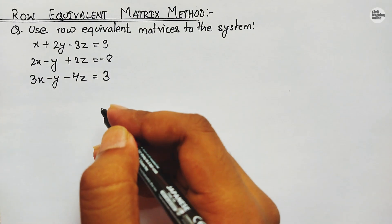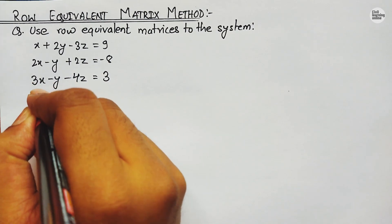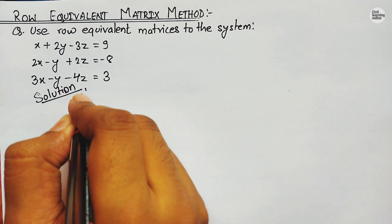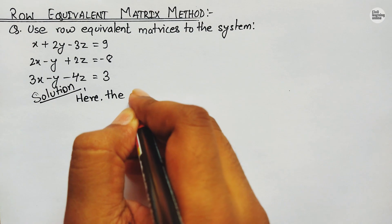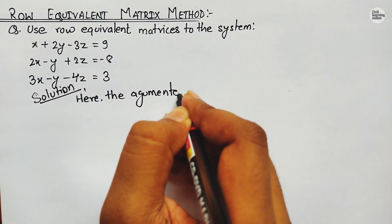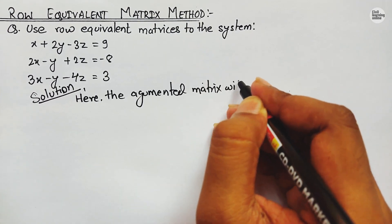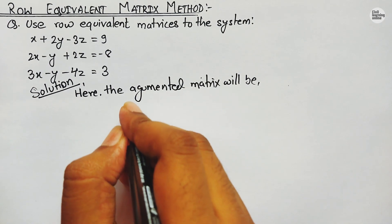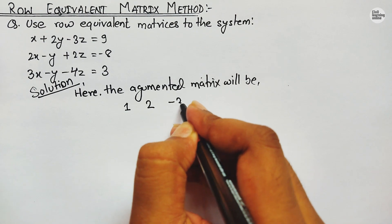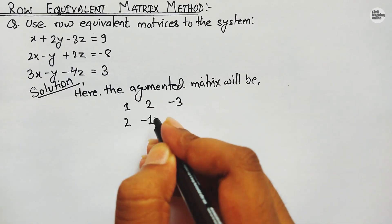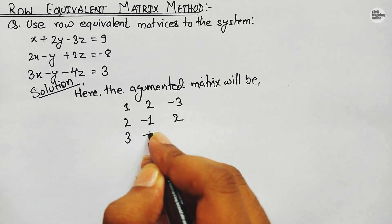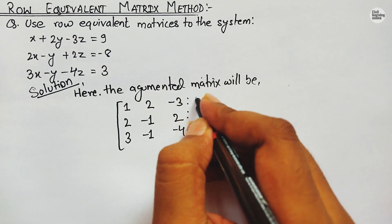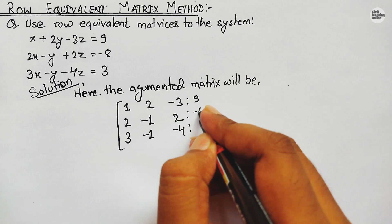Let us begin with the solution. The augmented matrix is simply the coefficients of all the algebraic expressions. So we write: 1, 2, -3; 2, -1, 2; 3, -1, -4 — with two dots separating the coefficient matrix from the right-hand side values: 9, -8, and 3.